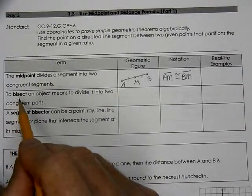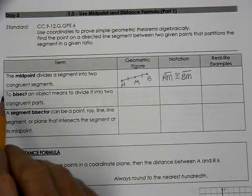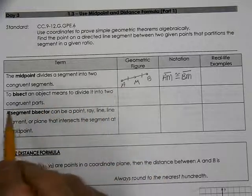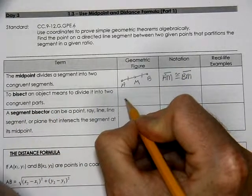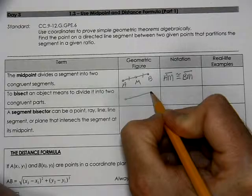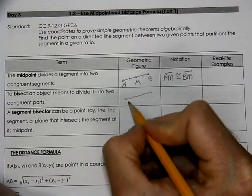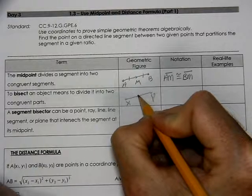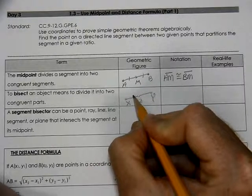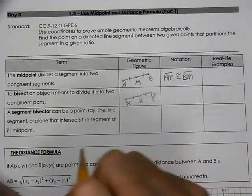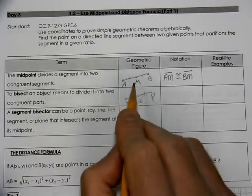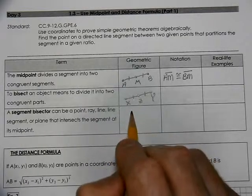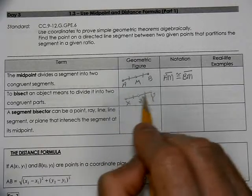To bisect an object means to divide it into two congruent parts. We'll have the same picture, calling it X and Y. If you have a midpoint, you get two congruent parts. If you bisect something, you get two congruent parts.